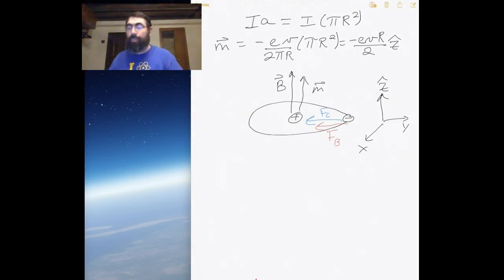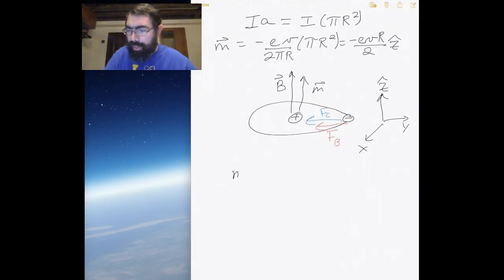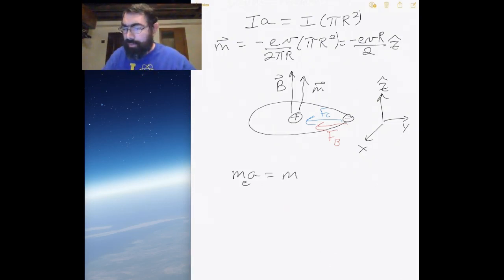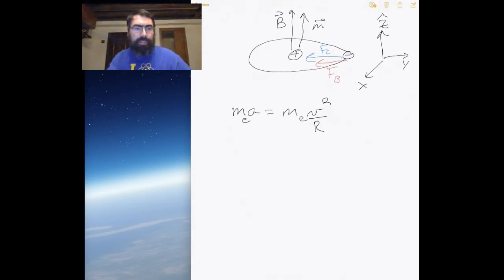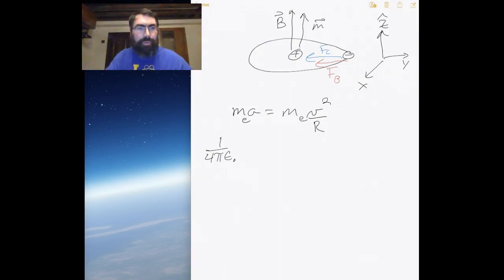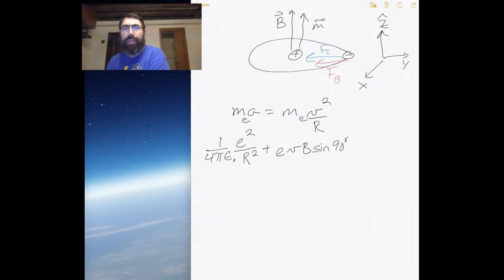The centripetal force is essentially Newton's second law: mass of the electron mₑ times velocity squared divided by R. Including all forces, we have the Coulomb force (ke²/R²) plus the magnetic force (evB sin 90°), since the magnetic field is perpendicular, and all of that equals mₑv²/R.